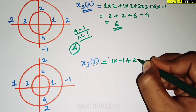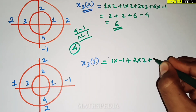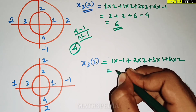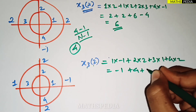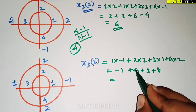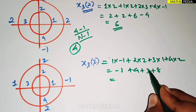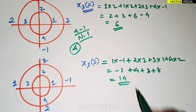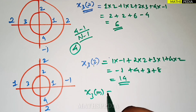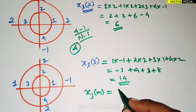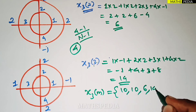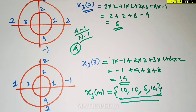Multiply for x3(3): 1×(-1) + 2×2 + 3×1 + 4×2 = -1 + 4 + 3 + 8 = 14. So x3(3) = 14. The final circular convolution result x3(m) = {10, 10, 6, 14}.